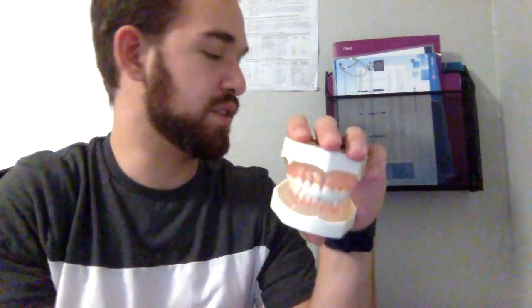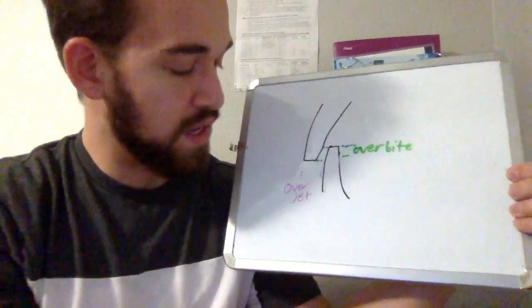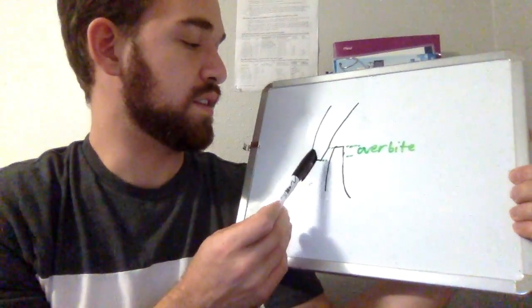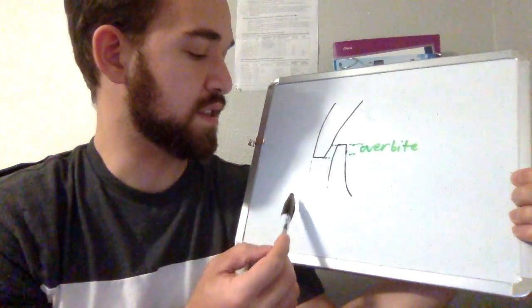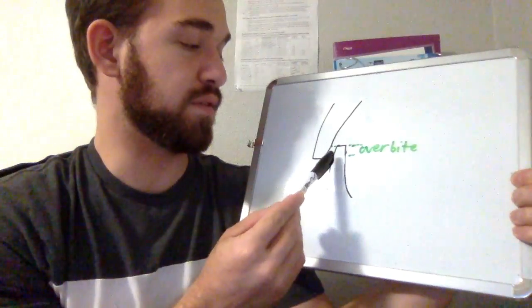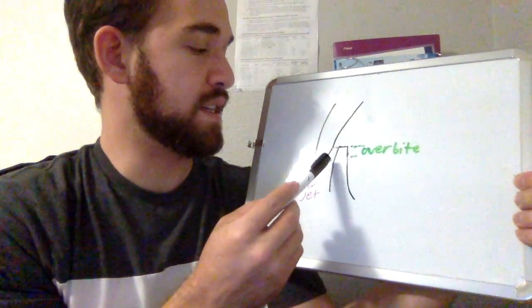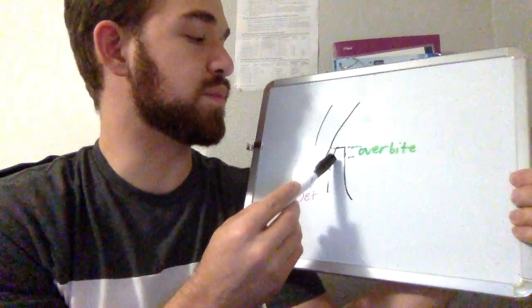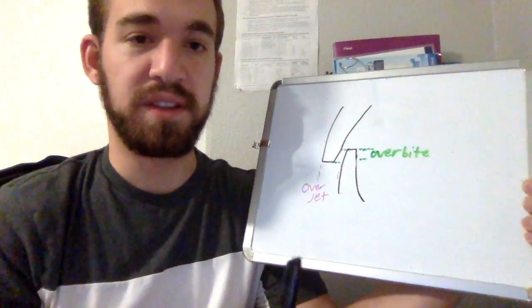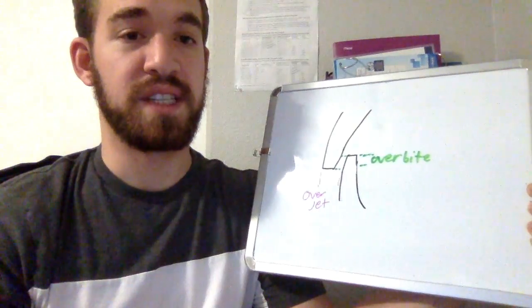Those are the different classes. Some terminology: these are your central incisors. Overjet is the amount your central incisor sticks out in front of the opposing tooth — shown here in purple — how far it protrudes in front of your mandibular central incisor. Overbite is how much the maxillary incisor overlaps vertically with the mandibular central incisor.